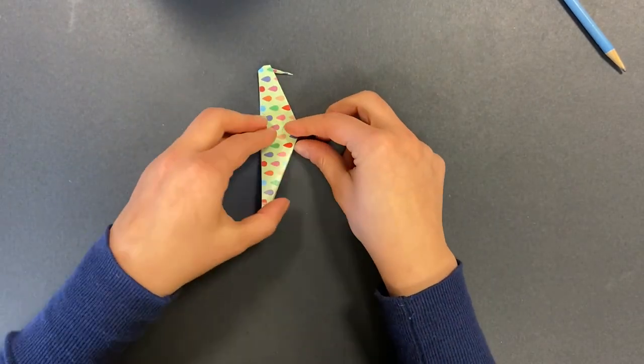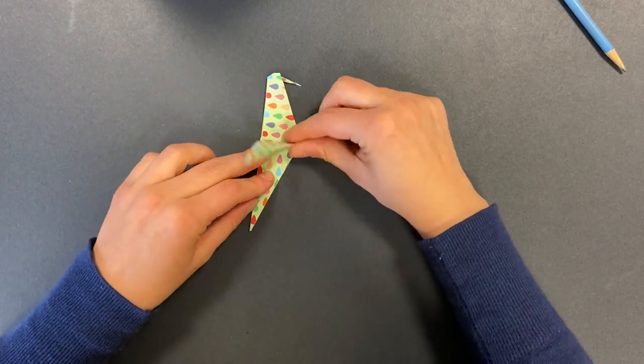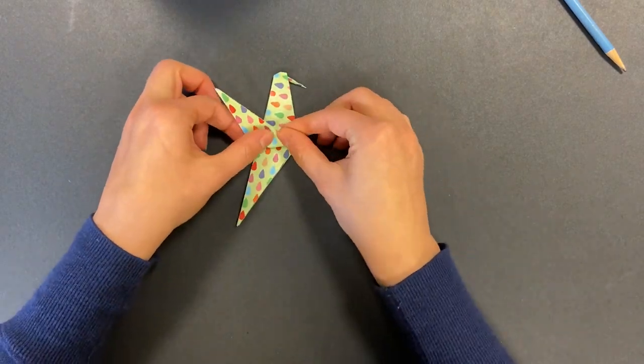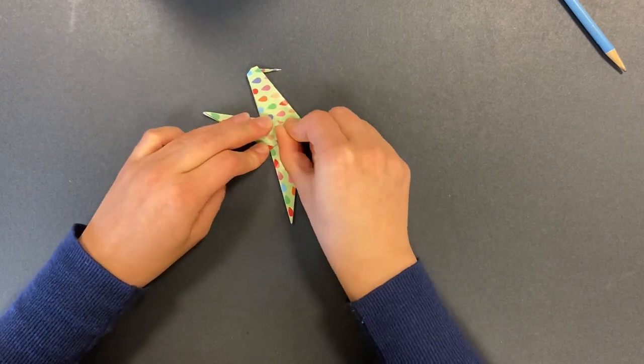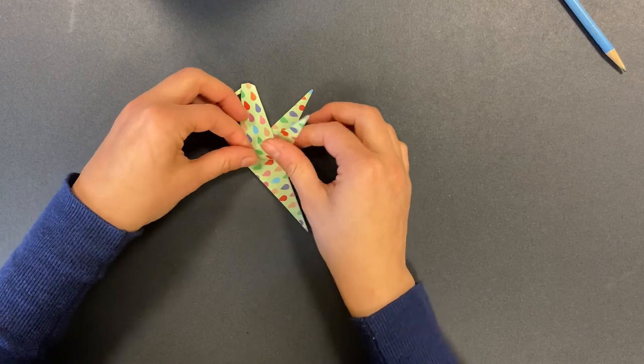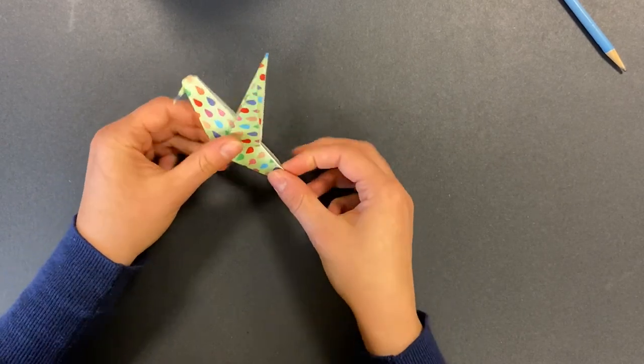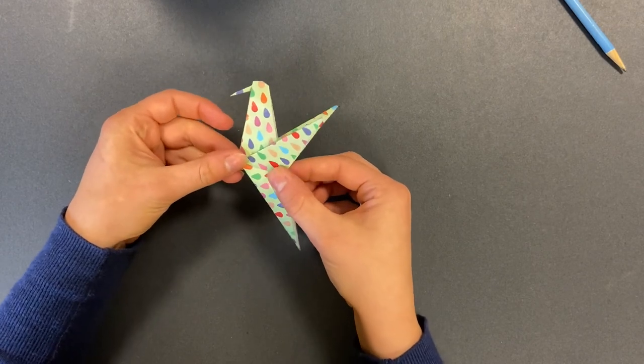The last step is going to be folding the wings up. So you're going to take one of these wing pieces, fold it back, flip the paper over, and repeat on the other side. You can line it up with your other wing. And you've got your complete hummingbird.